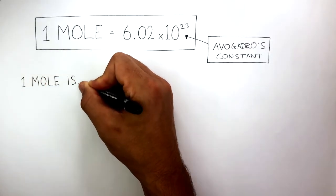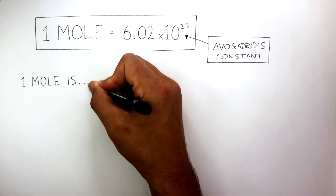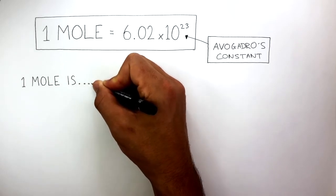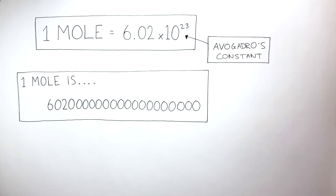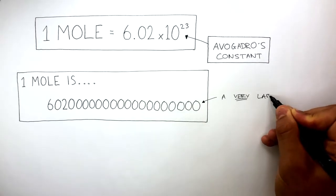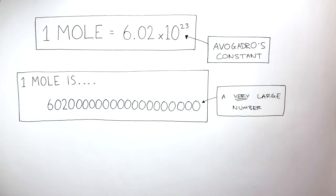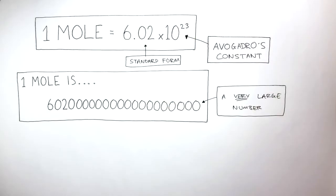One mole is a very large number. When it's not written in standard form, the whole number is extremely long, so it's better to use standard form and just say 6.02 times 10 to the power of 23.